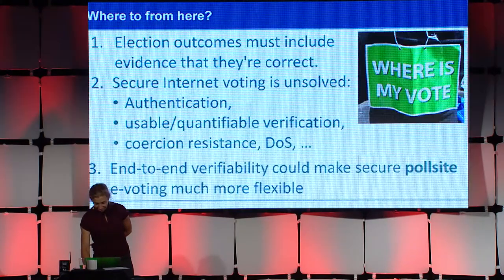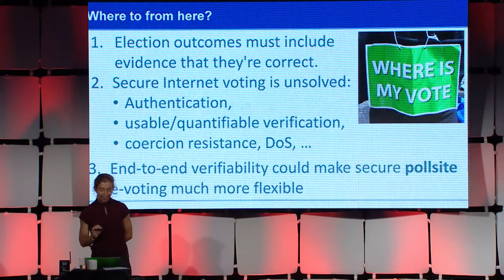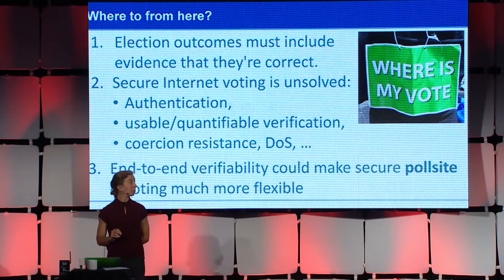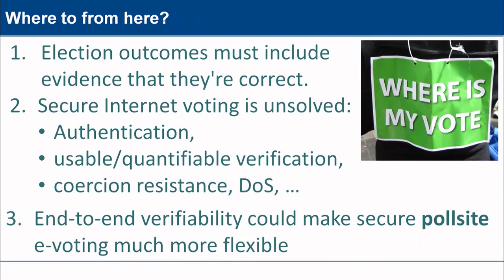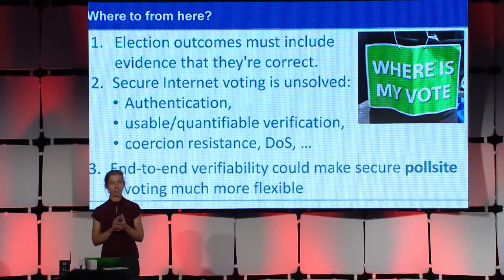In summary, the really important thing about election outcomes is public evidence that they're correct, and that's really hard in the context of private votes. Secure internet voting is unsolved. Instead of saying we have a problem therefore we have to do internet voting, we should be examining the problem that we have and thinking about how we could make secure voting in a polling place more flexible without throwing out integrity for the sake of convenience.